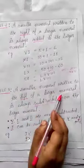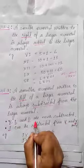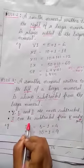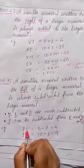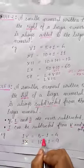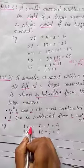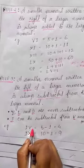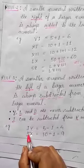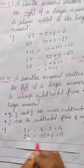Rule 3: A smaller numeral written to the left of a larger numeral is always subtracted from the larger numeral. However, V, L, and D are never subtracted. I can be subtracted from V and X only. For example, IV means 5 minus 1 equals 4. You have used this in Class 4 as well, and now you know how this Roman numeral formula works.